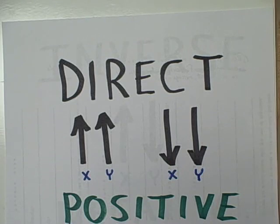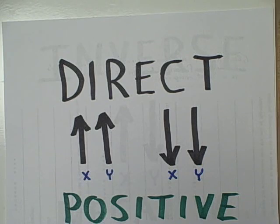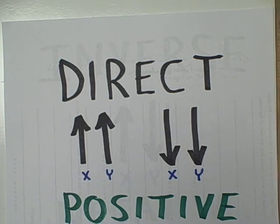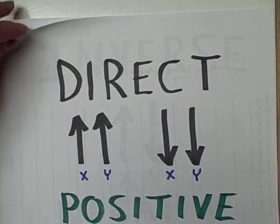When we use the word positive, we do not mean to imply that there is anything exceptionally good about the correlation. Never call a correlation good or bad. Positive merely refers to a direct relationship: if one variable is high, so is the other; if one variable is low, so is the other. The variables move in the same direction.